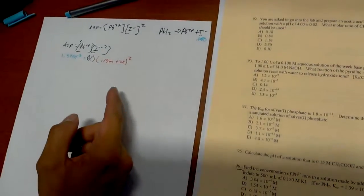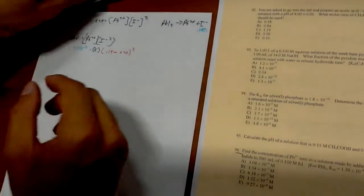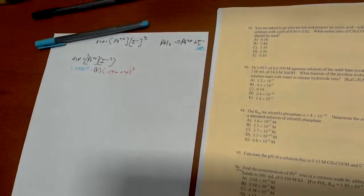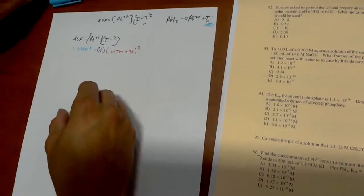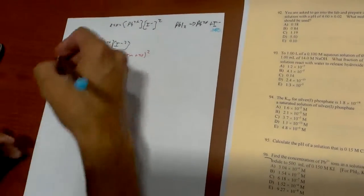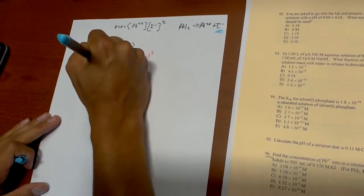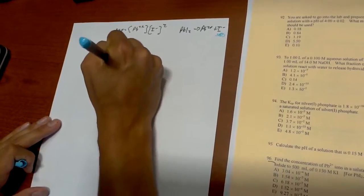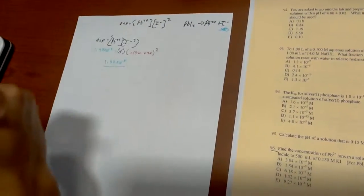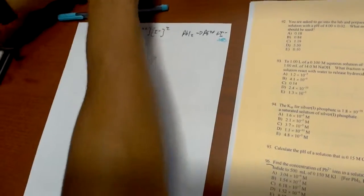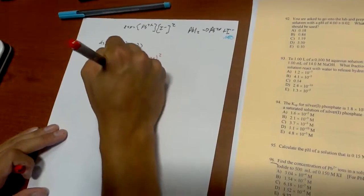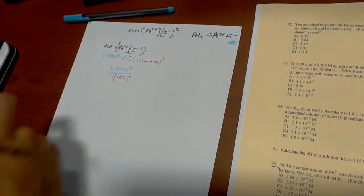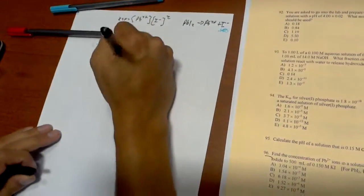The only reason why we're going to assume that the 2x is smaller than 0.15, so we're just going to go and take that out of the equation. So 1.39 times 10 to the negative 8 divided by 0.15 squared equals x.